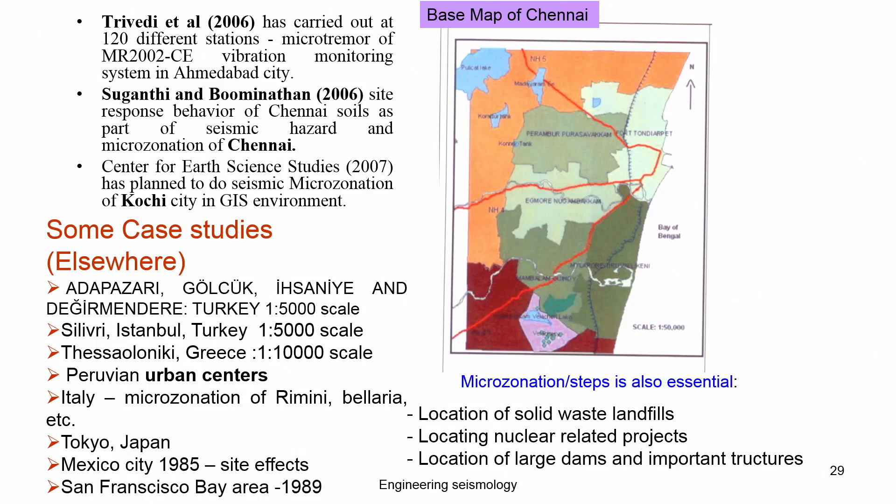Systematic integration of hazard has been published for only a few cities in India — such as Guwahati, Delhi, Bangalore as a city, and Sikkim as a state. There may be a large number of publications on individual microzonation components, but the systematic hazard index value considering all parameters and all earthquake hazard effects at a particular location is very important.